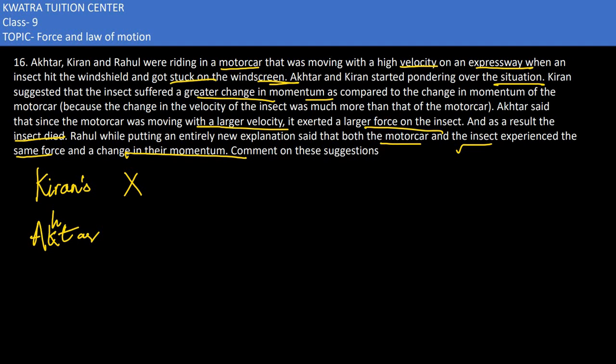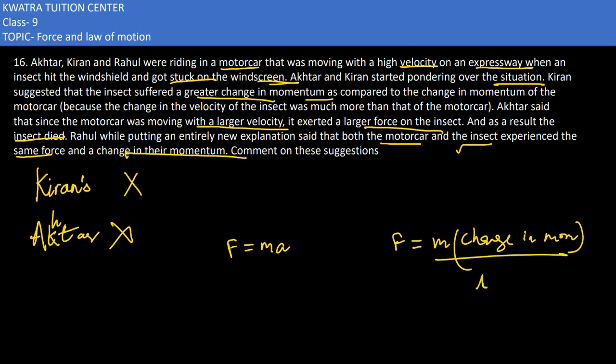Rahul's explanation is correct. The insect and the motor car experience the same force and the same change in momentum. The insect dies because it was unable to bear that large force and change in momentum. We know that force is equal to mass times acceleration, or equivalently, force equals change in momentum divided by time. So force and change in momentum are directly proportional to each other. Therefore, Rahul's statement is correct according to what they observed.